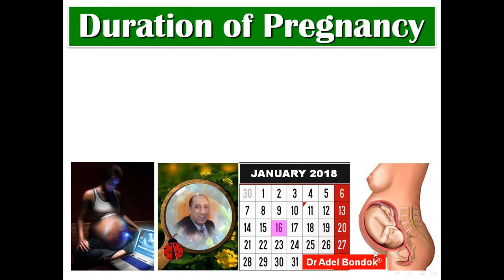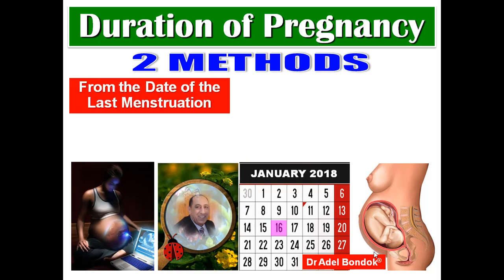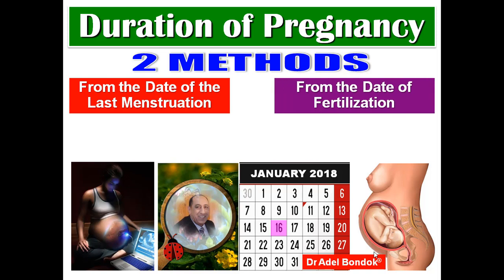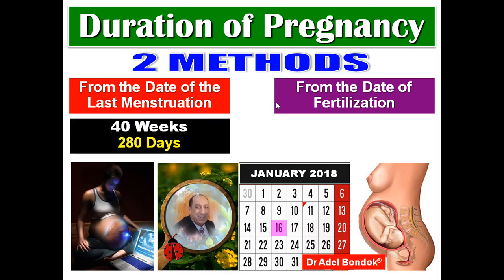The duration of pregnancy can be measured by two methods: from the date of last menstruation, or from the date of fertilization. The date of last menstruation is typically known and is used to measure the date of delivery. From the date of last menstruation, pregnancy is 40 weeks; from the date of fertilization, it is 38 weeks — two weeks less.